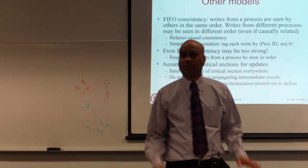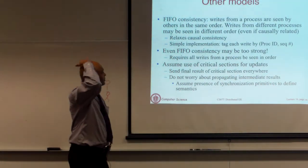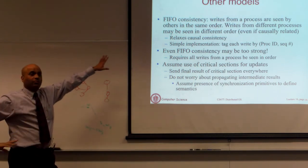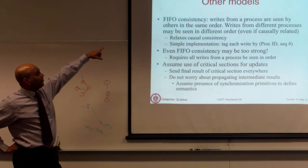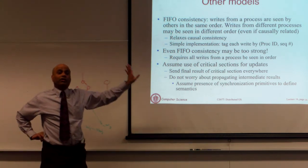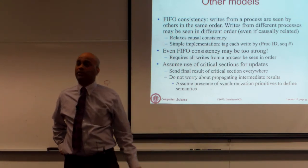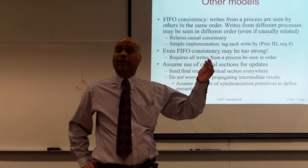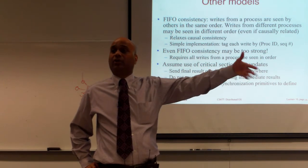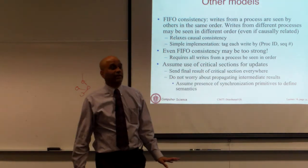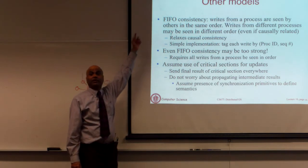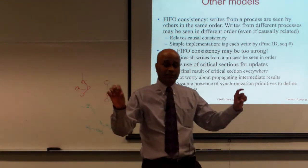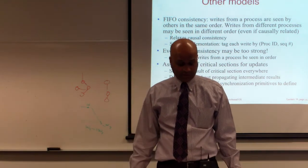FIFO consistency is even weaker than causal consistency. It says you only order the writes from one process — you don't try to establish any global order. If a process keeps issuing writes, those writes from that process are ordered. But across processes, you might get things in different orders. That's an even weaker form of consistency — only respecting program order within a process, nothing else across processes.